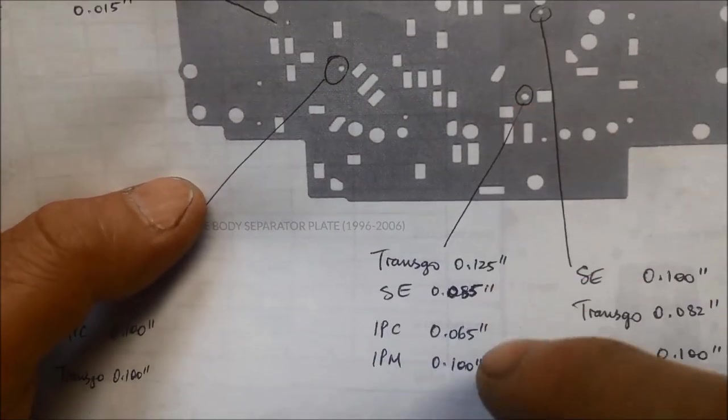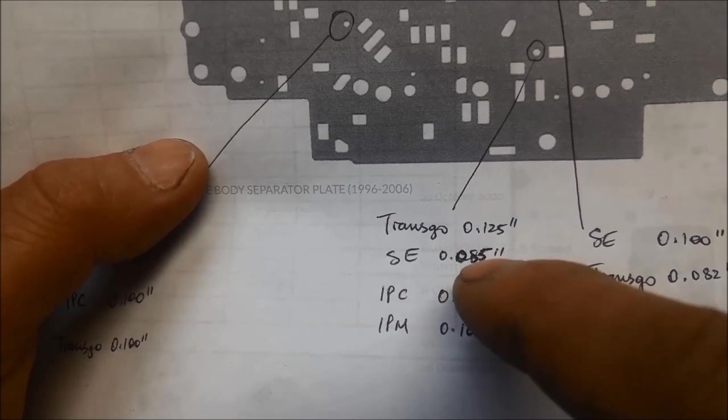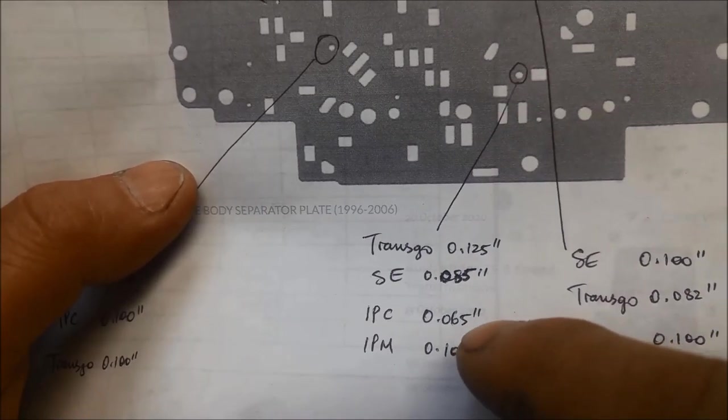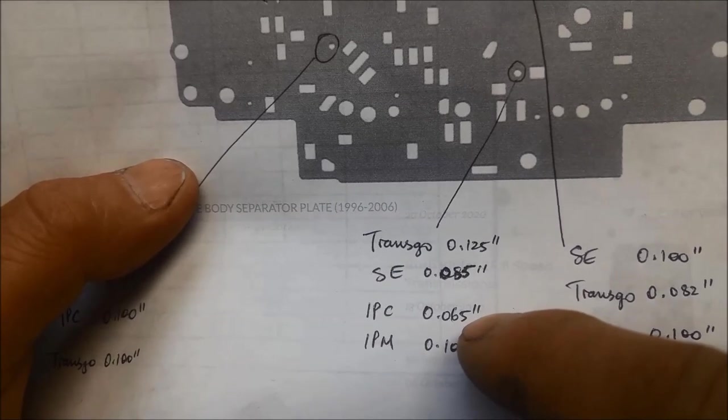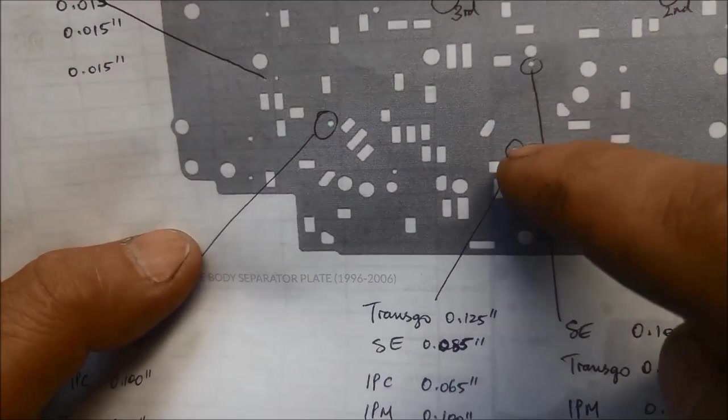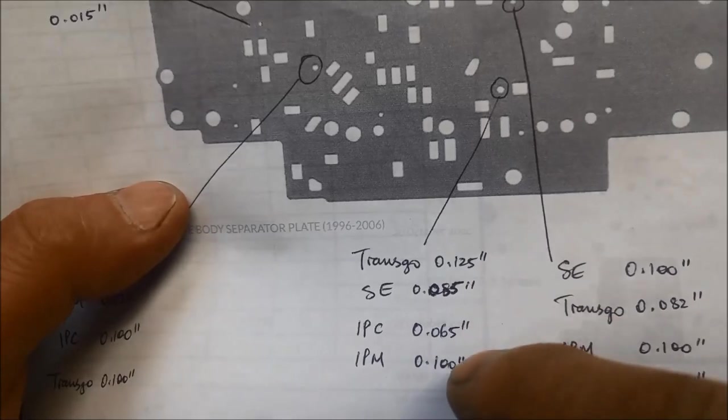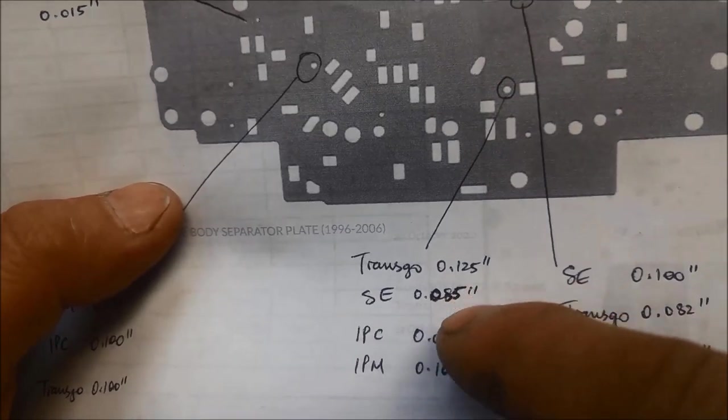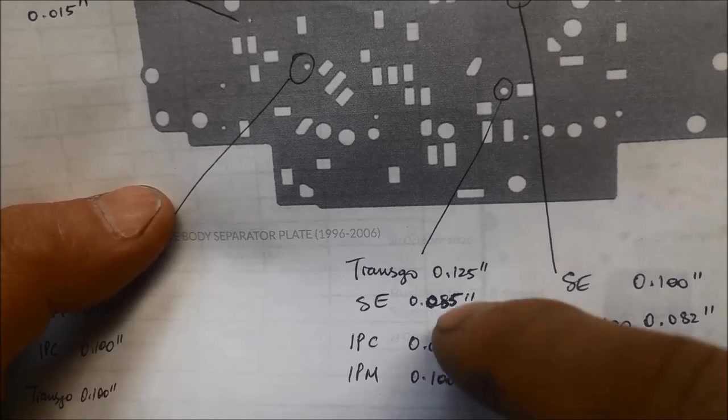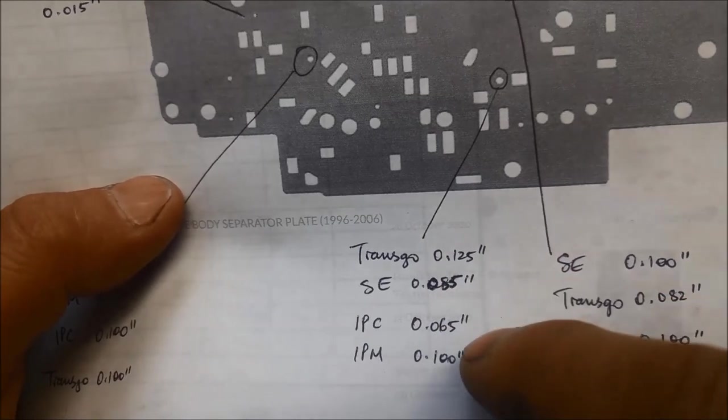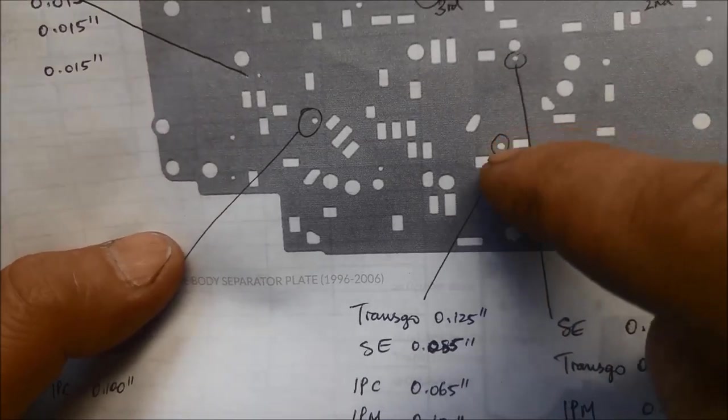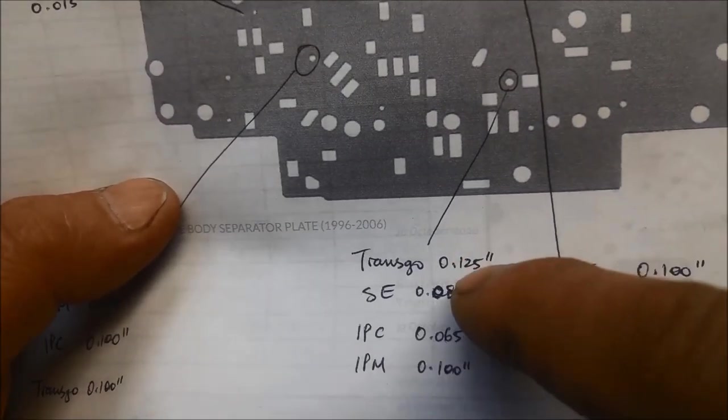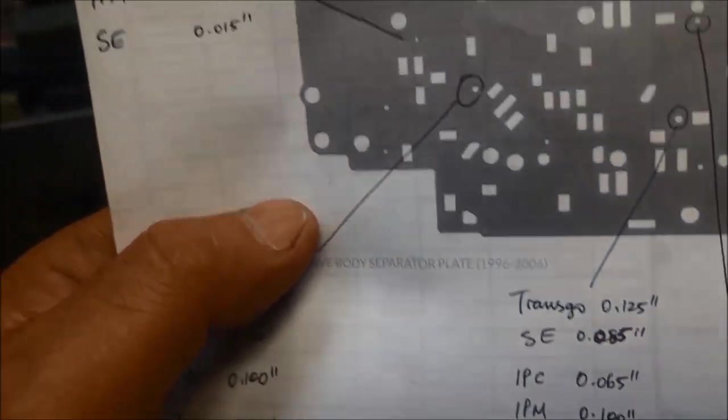This port here. I've got the SE, which is 85,000. The IPC, 65,000. So we might look at sort of tapping that one out just to make it the same as the SE. So from 65,000 to 85,000 there. We'll drill that one out. And if you have a look, the IPM and the TransGo 100,000 there and 125,000 there.